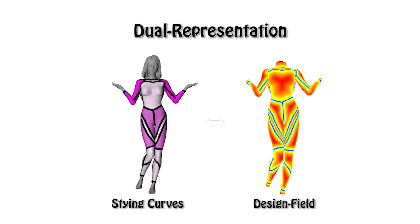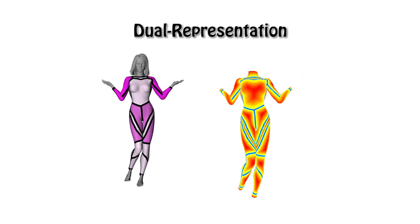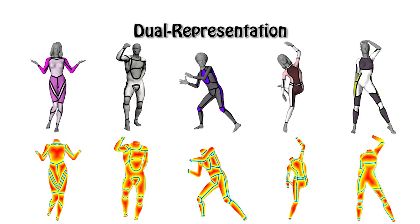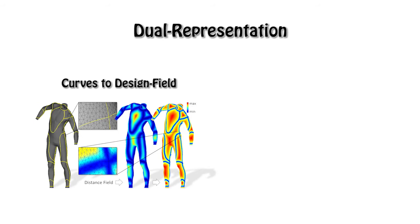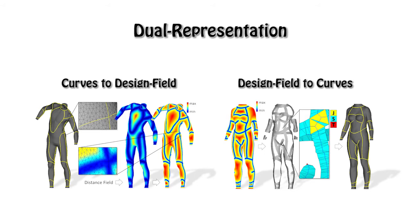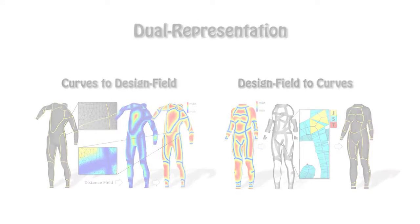To facilitate the evolution, we record each design by dual representations. One is the styling curves, and another is the design field. We propose an efficient conversion between the dual representations. The design field is generated from styling curves through a geodesic distance field. Inversely, by extracting a banded region on the design field, it can be converted back to styling curves by finding the chordal axis on the triangulation.